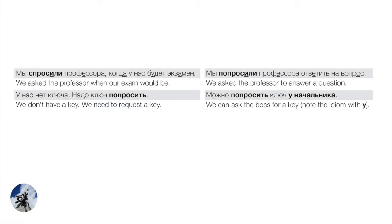For example: Мы спросили профессора, когда у нас будет экзамен? — We asked the professor when our exam would be. Note профессора is an accusative direct object. We asked the professor when our exam would be. This mirrors the English pretty well — professor is the direct object of 'asked.' Here's the other verb for requesting: Мы попросили профессора ответить на вопрос — we asked the professor, direct object профессора, to answer a question.